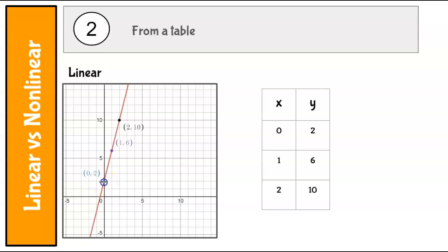So a linear graph is linear because between any two points, we have a constant rate of change. Between this point and this point, for every one we go over, we go up 4. We go over another one, we still go up 4. As long as that's consistent, it's going to be linear.